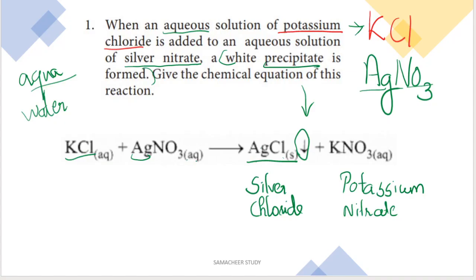First question: when an aqueous solution of potassium chloride is added to an aqueous solution of silver nitrate, a white precipitate is formed. Give the chemical equation of this reaction.